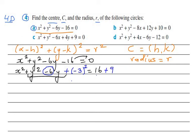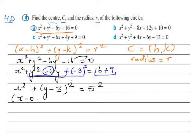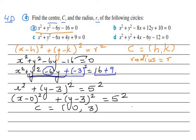Adding 9 to both sides, the equation becomes x² + (y - 3)² = 25, which is 5². Writing in standard form: (x - 0)² + (y - 3)² = 5². So the center is (0, 3) and the radius is 5.